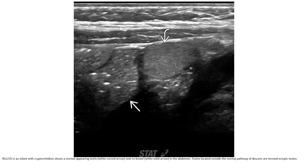This is the ultrasound of the right lower quadrant in an infant with cryptorchidism. A normal-appearing testis is seen next to the bowel in the abdomen — a testis located outside of the normal pathway of descent, confirming the term ectopic testis.